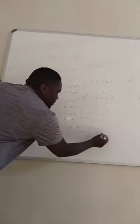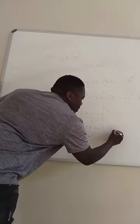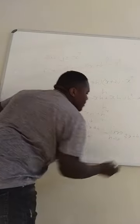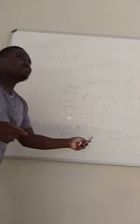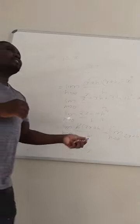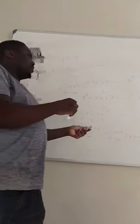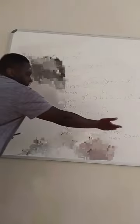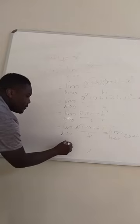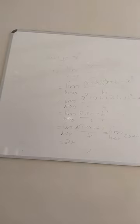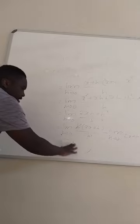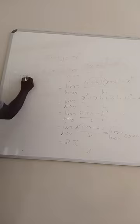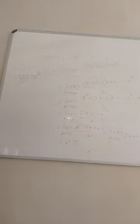The h in the numerator cancels with the h in the denominator, leaving the limit as h approaches zero of 2x + h. When h approaches zero, we substitute h equals zero, and we get 2x. So f prime of x equals 2x. That's how you solve it using the first principle.